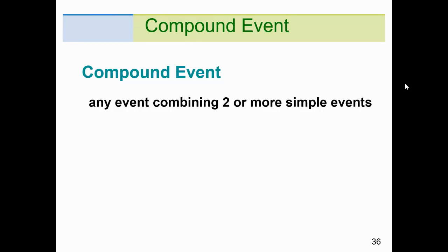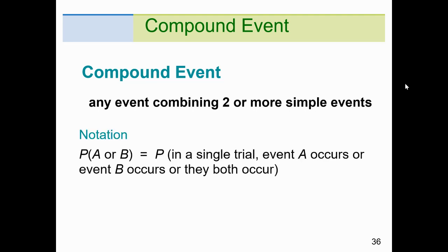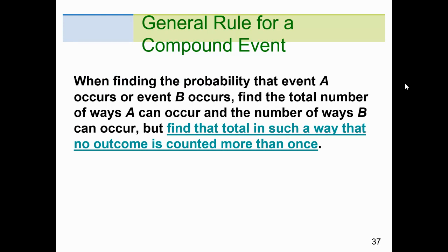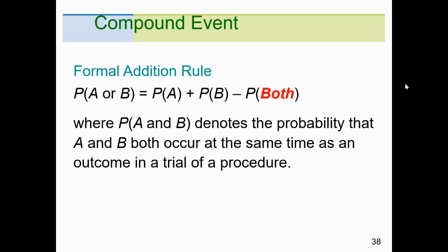A compound event under the addition rule is any event combining two or more simple events. The notation is probability of A or B — in a single trial, either event A occurs, event B occurs, or perhaps they both occur at the same time. We find the total number of ways A or B can occur such that no outcome is counted more than once — no double counting. The formal rule: P(A or B) = P(A) + P(B) - P(A and B).